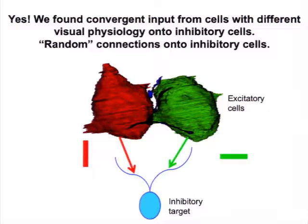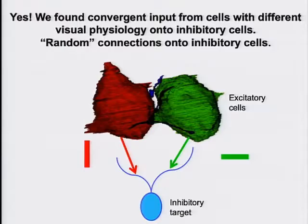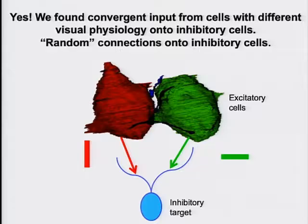We have physiology data belonging to these electron micrographs of these neurons. Going through the three-dimensional data set and drawing neurons, we were lucky enough to be able to answer the question: do inhibitory cells get random input from excitatory cells? The answer was yes — essentially yes. We found convergent input from cells with different visual physiology — different colors — onto inhibitory cells. So it's random connections — functionally random, at least, along the simple label of different orientations onto inhibitory cells. It fits with neural network models where inhibition is more of a gain control kind of thing rather than participating in the computation itself.